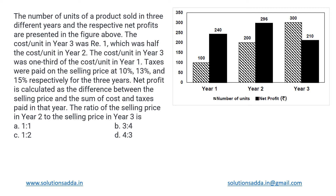We have been given a bar graph which mentions the number of units of a product sold in three different years and the respective net profits in rupees, with years on the x-axis. The cost per unit in year three was 1 rupee, which was half of the cost per unit in year two — so year two was 2 rupees — and one third of year one, so year one was 3 rupees. Taxes were paid on the selling price at 10%, 13%, and 15% respectively for the three years.